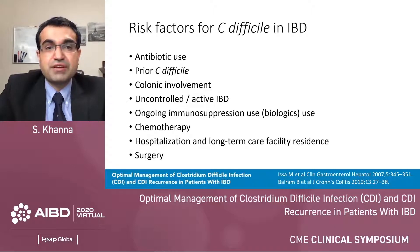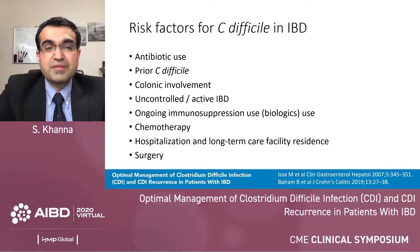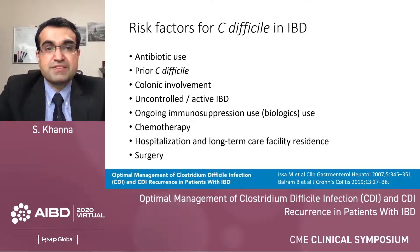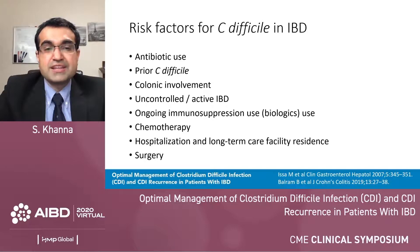Risk factors for C. diff infection in inflammatory bowel disease include antibiotics — adding antibiotic exposure to pre-existing dysbiosis leads to more dysbiosis and C. diff infection. A history of C. diff infection is a very important risk factor. Colonic involvement — Crohn's colitis more than Crohn's ileitis, and ulcerative colitis more than Crohn's disease — increases risk. More active IBD leads to higher dysbiosis. Immunosuppression, especially biologics, are a risk factor, as are chemotherapy, hospitalization, long-term care facility residence, and surgery.